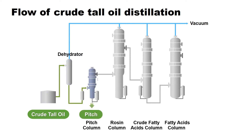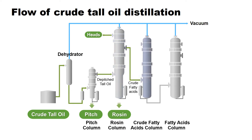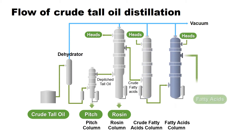The de-pitched crude tall oil is then fed into the rosin column where the rosin is separated. Low volatile components are subsequently removed at the crude fatty acids column. Finally, the de-pitched crude tall oil is distilled and separated into fatty acids and distilled tall oil in the fatty acids column. This is how crude tall oil is effectively distilled and separated. The distillation mechanism is explained in the following slides.